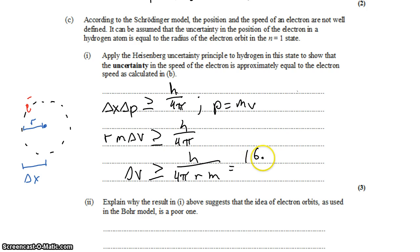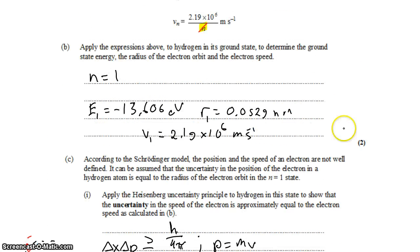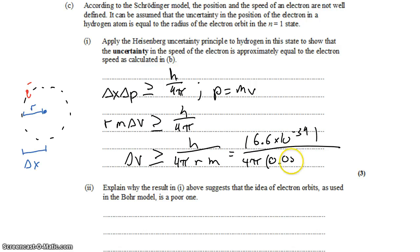That's 6.6 times 10 to the negative 34, Planck's constant, on 4 pi. The radius was 0.0529 times 10 to the negative 9 meters. And the mass of an electron is 9.11 times 10 to the negative 31 kilograms.